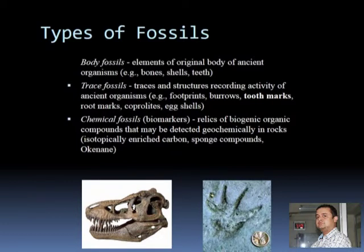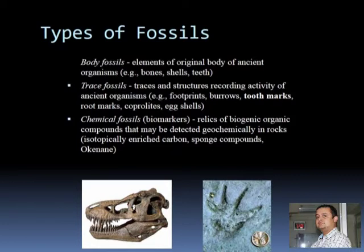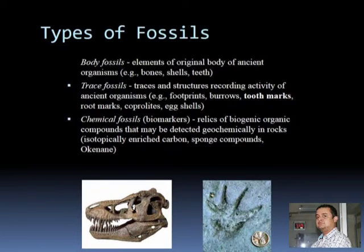Trace fossils are trace structures recording the activity of ancient organisms — evidence of a previous organism, but not the body structure itself. For example, footprints. If you walk on a beach or the sandy banks of a river, your footprints are there. If something happened very suddenly and these footprints became immobilized — say a sandstorm — and this became fossilized, you can study those footprints. That kind of fossil is a trace fossil. Other types include burrows, tooth marks, root marks, coprolites, and eggshells.